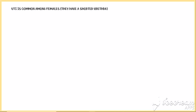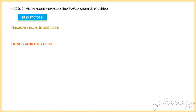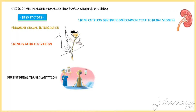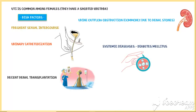Several risk factors are associated with the pathogenesis of urinary tract infections. These include frequent sexual intercourse, urinary catheterization, recent kidney transplantation, urine outflow obstruction commonly due to renal stones, systemic diseases like diabetes mellitus, and certain medications such as immunosuppressive agents and certain antibiotics.